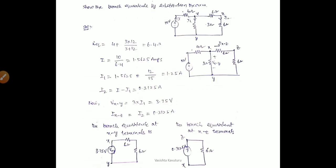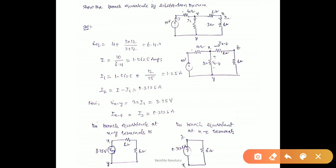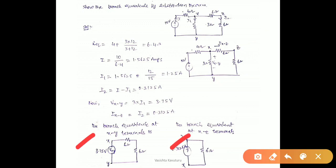Let us do an example: show the branch equivalence by the Substitution Theorem. After simplifying the given network at the terminals XY and XZ, the XY branch can be represented as V_XY and the XZ branch as current source I_XZ. After calculating, the voltage V_XY is 3.75 volts and the current I_XZ is 0.3125 amperes. Therefore the branch equivalence in terms of a voltage source is V_XY connected with the remaining elements, and the current equivalence is 0.3125 amperes with a 6-ohm resistance in parallel, as shown in the figure. Thank you.